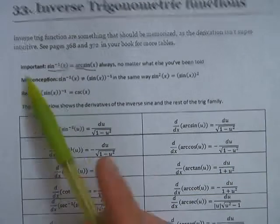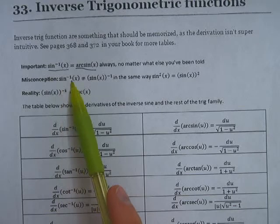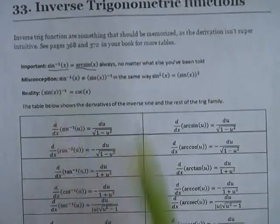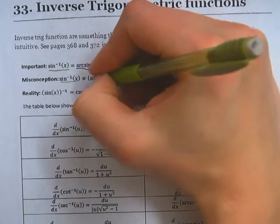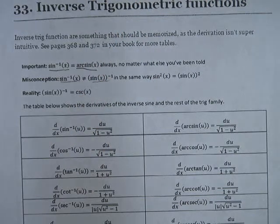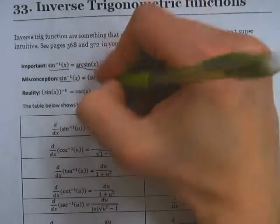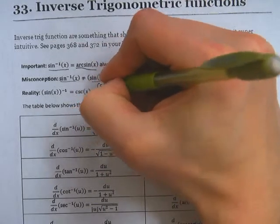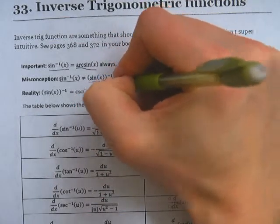Misconception number two is that sine negative one of x means the inverse sine of x, not sine of x to the negative one power. Sine of x to the negative one power is cosecant of x. Remember, one over sine is cosecant.